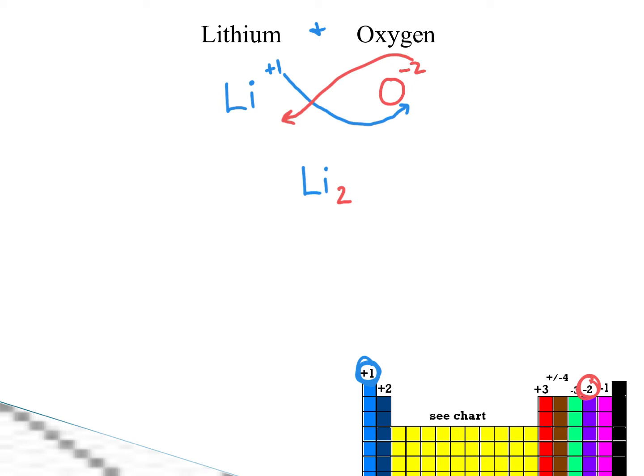So all I'm doing is taking these numbers, and I am pulling them down to the opposite side. I'm crisscrossing them. And so I'll rewrite this. I got lithium, and it has a two now next to it. Remember, we don't write the charge. So it's Li2, and then it is O, and then how many did we have to the O? One. But we know from that we do not need this one.